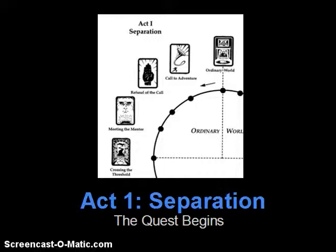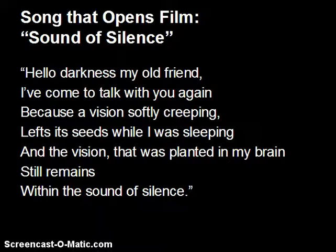Act 1 is called Separation because it's when a character thinks they're happy — they're in the ordinary world having a good old time, thinking everything's fine. Then they realize there's actually something they're missing, something they're going to need to quest for. So they have to separate from who they were in order to go on this journey and leave where they've been.